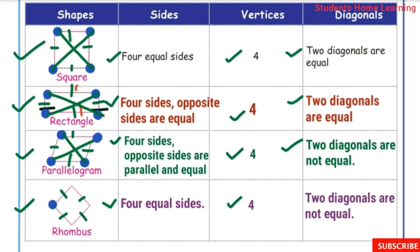Rhombus has 4 sides — 1, 2, 3, 4. Rhombus has 2 diagonals — 1 and 2. The lengths of the 2 diagonals are equal.